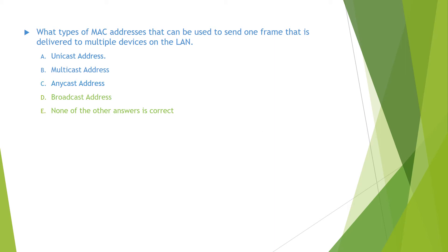Anycast address is actually not a type of MAC address — it is a type of IPv6 that is used to send to the nearest computer. Broadcast address is a type of MAC address that represents all the computers in a VLAN, so if a frame is sent to a broadcast address, all the computers in a VLAN will receive it. None of the other answers is correct.